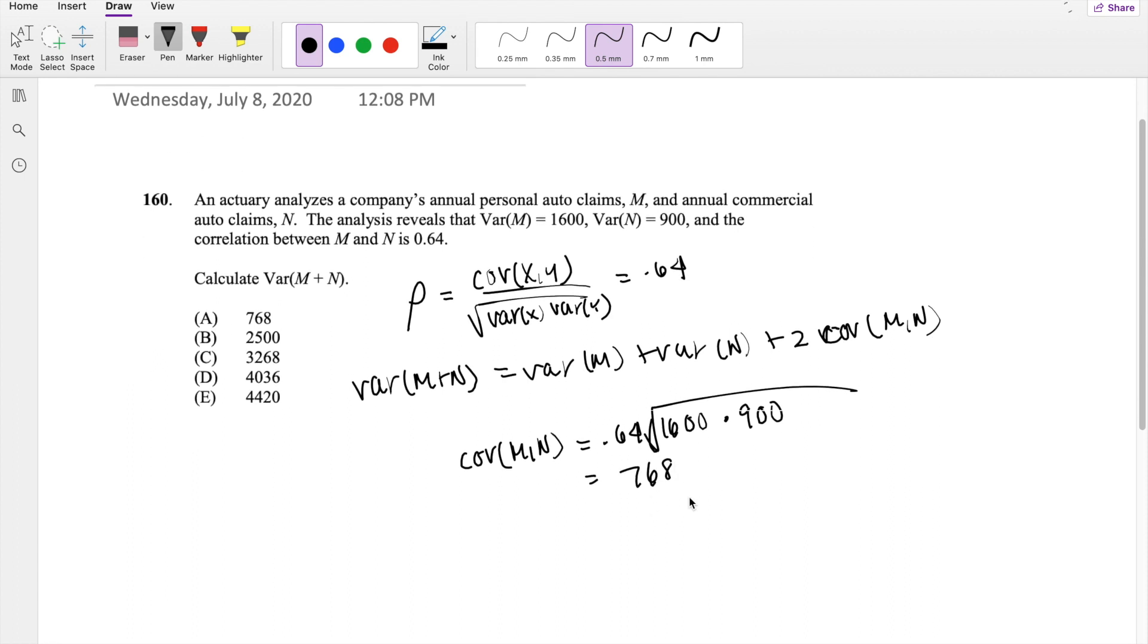All right, so then we have everything we need. Variance of m, that's equal to 1,600. Variance of n, that's equal to 900 plus two times the covariance, 768. This is equal to 4036, our answer D.